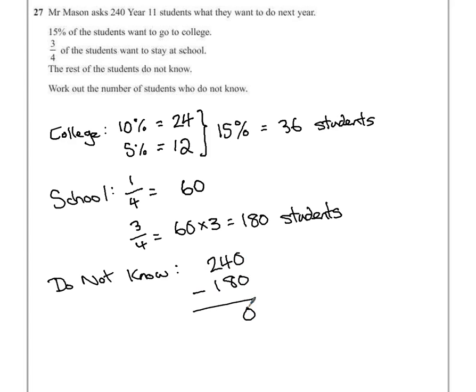0 take away 0 is nothing. We can't do 4 take away 8, so we borrow from the hundreds column, carry that across. 14 take away 8 is 6, so there are 60 students there.